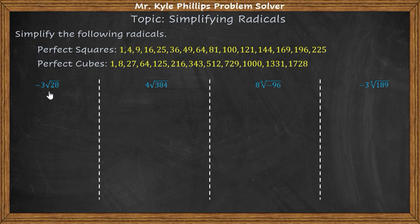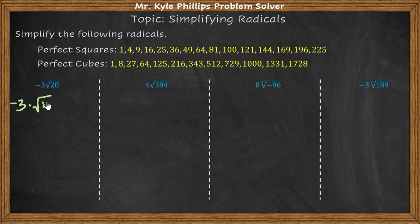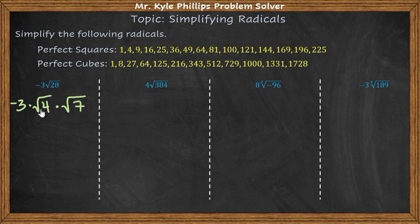When simplifying this radical, we want to look for the largest perfect square that can divide into 28 and give a whole number — that is going to be 4. So here we have negative 3 times the square root of 4 times 7, since 28 divided by 4 is 7.